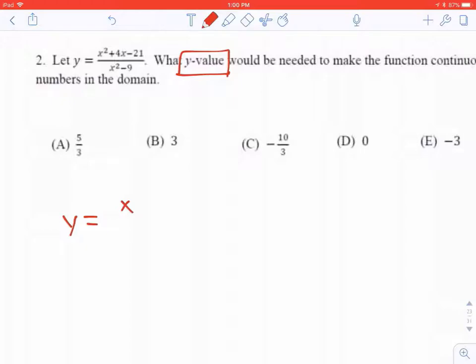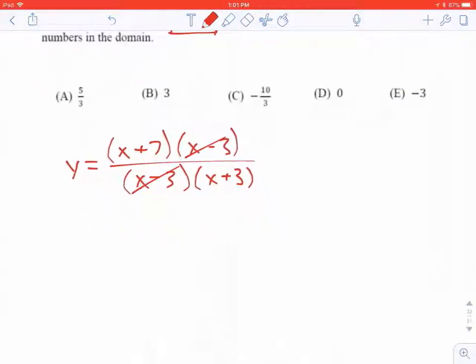So the top is going to factor into x plus 7 and x minus 3. The bottom is a difference of two squares. The x minus 3s cancel. Hole.